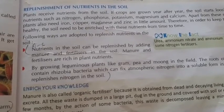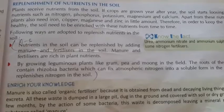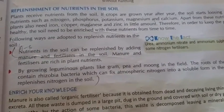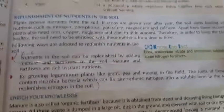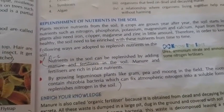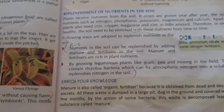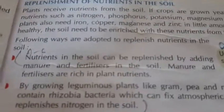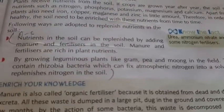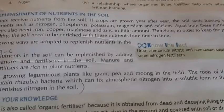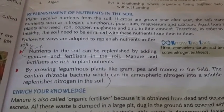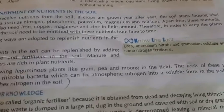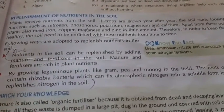Manure and fertilizers are rich in plant nutrition — rich in nitrogen, phosphorus, and potassium — so they can replenish the nutrients. Also, by growing leguminous plants like gram, pea, and moong in the field, rhizobia bacteria present in their roots can fix atmospheric nitrogen into the soil, thus replenishing nitrogen in the soil.